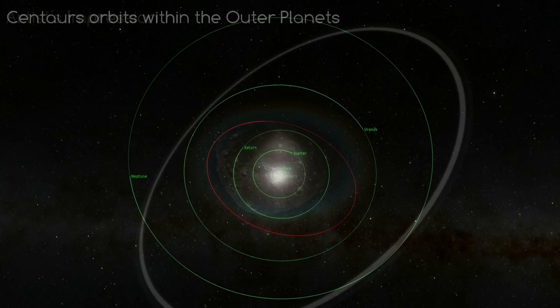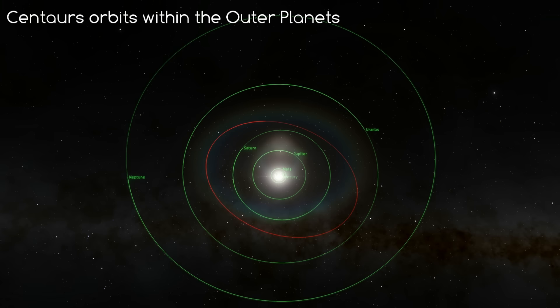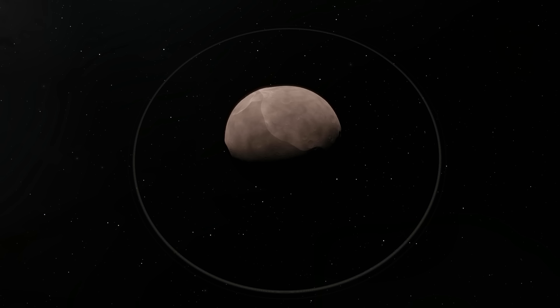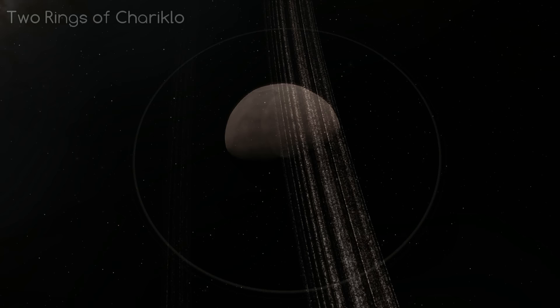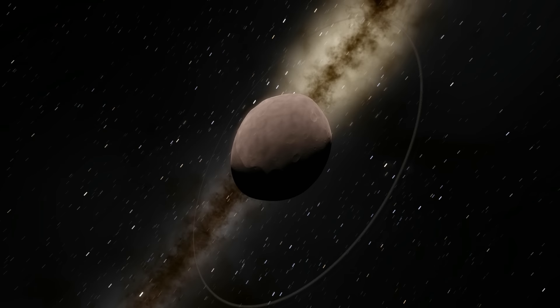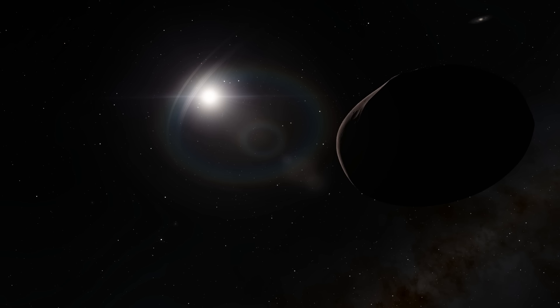Number 6: 10199 Chariklo. This asteroid technically shouldn't be on this list, but we had to include it due to its remarkable ring system. It's what we call a Centaur — a minor planet that orbits within the orbits of outer planets, in this case Uranus and Saturn. It is the largest known Centaur, being over 300 km in diameter, and it has a ring system much like Saturn's, but on a much smaller scale. In 2013 it was discovered to have two rings — one 7 km and the other 3 km wide, about 9 km apart — making it the smallest known object to ever have rings. Because it's so small, these rings shouldn't be stable at all; either they are actively contained by shepherd moons, or they will slowly wane and disperse over the next few million years.